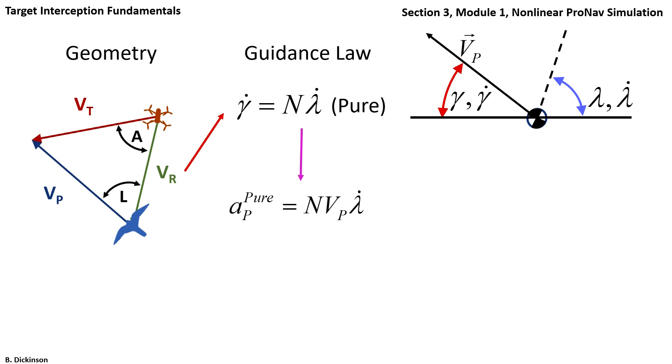In Section 2, you were asked to derive an acceleration form of pure pronav. In doing so, and assuming that the pursuer velocity vector was constant and aligned out its nose, the pure pronav command was perpendicular to VP. So the acceleration form of pure pronav required two inputs: pursuer velocity and line of sight rate.